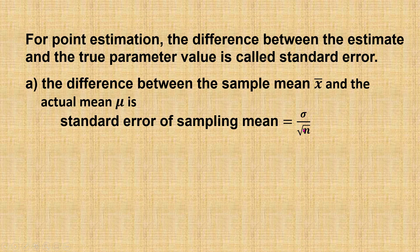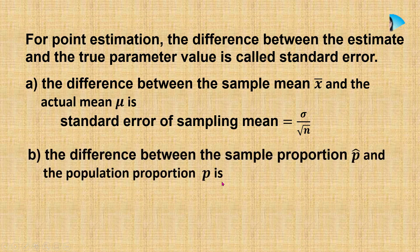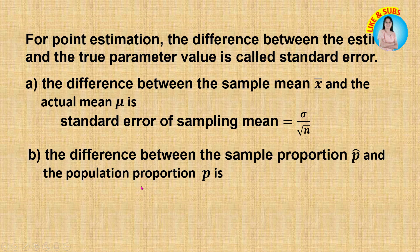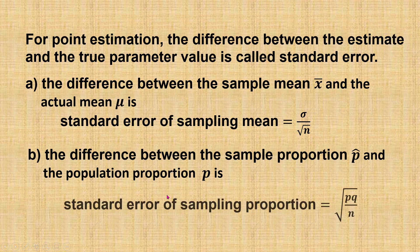This is the standard deviation of the sampling distribution of the sample mean. When using sample proportion to estimate the population proportion, the difference between the sample proportion and the population proportion is called standard error of sampling proportion, which is equal to square root of p times q divided by n. This is the standard deviation of the sampling distribution of the sample proportion.